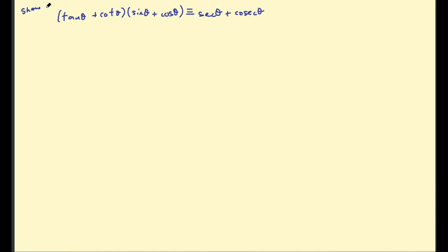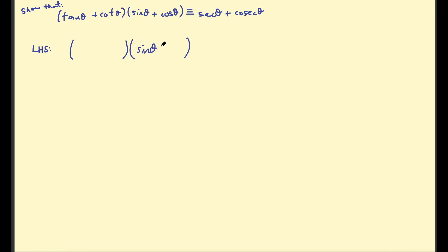Again, this is a 'show that' identity. The left hand side is the messier side to work with. It's tempting to expand the brackets straight away, but the first bracket has tan θ and cot θ — expanding it would create messy fractions. Instead, start by simplifying that first bracket: change tan and cotangent into sine and cosine. So tangent is sine over cosine, and cotangent is cosine over sine.